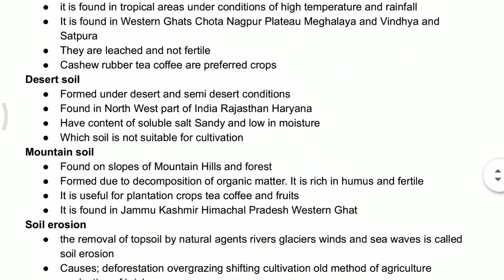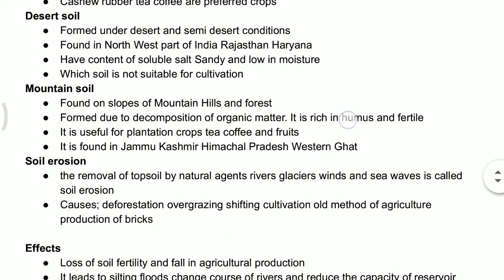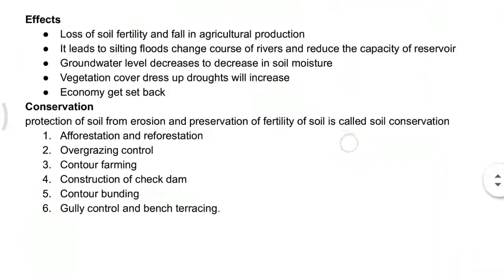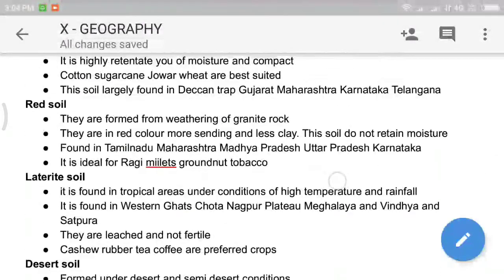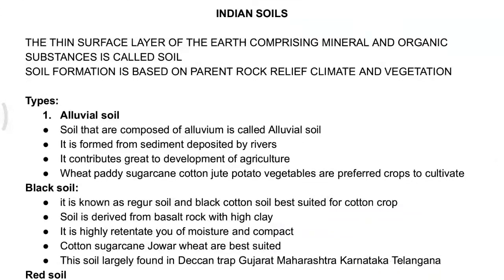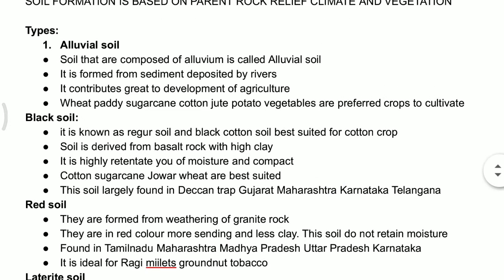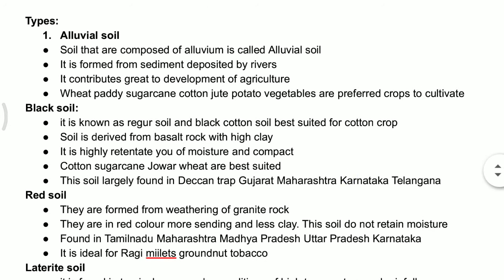These are the soils we are going to discuss in this part, along with soil erosion, effects, and conservation. First, let's start with alluvial soil. Alluvial soil is one of the very fertile soils. Soil composed of alluvium is called alluvial soil. One thing we have to remember is how alluvial soil is created — it is formed from the sediments deposited by rivers.